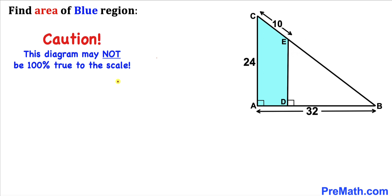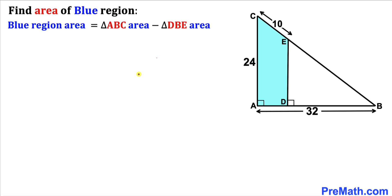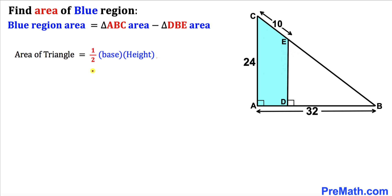Let's go ahead and get started with the solution. Here's our action plan: since we want to calculate the area of this blue shaded region, the blue region area is going to be equal to the area of this big triangle ABC minus the area of this smaller right triangle DBE.